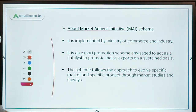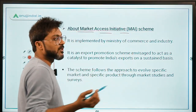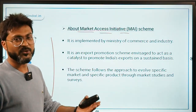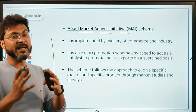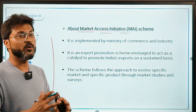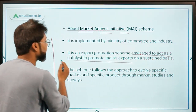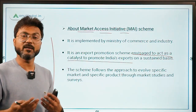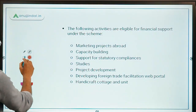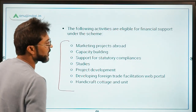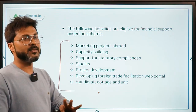The MAI scheme — Market Access Initiative — is implemented by the Ministry of Commerce and Industries. It is basically an export promotion scheme which acts as a catalyst to promote India's exports on a sustained basis. Activities eligible for financial assistance under this scheme include marketing projects abroad, capacity building, statutory compliance support, and more.